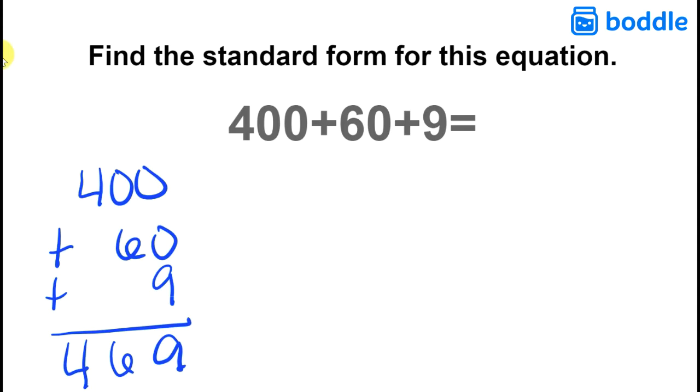We can also look at this and say that we have 9 ones and 60 is 6 tens. So put the 6 in the tens spot. And then with 400 we have 4 hundreds in the hundreds spot.